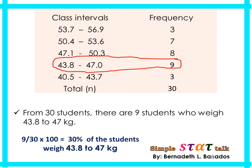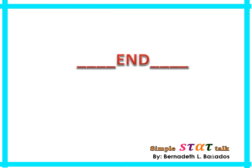We may also express the frequency in percentage: divide the frequency by the total number of values (30) and multiply by 100. For example, 9 divided by 30 times 100 gives 30%, meaning 30% of the students weigh 43.8 to 47.0 kilograms. Please watch the next video for another topic about cumulative frequency.